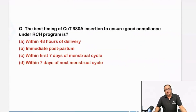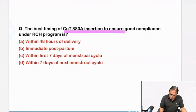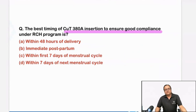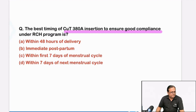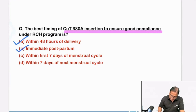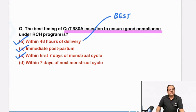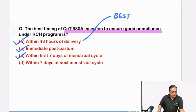Best timing for Copper T380 insertion — could you please confirm if this was the exact language of the question? If there were multiple options, then we know: one, immediate postpartum, and within the first 7 to 10 days of the menstrual cycle is considered best. RCH program says best is within 48 hours of delivery, but we can also do immediate postpartum and within the first 7 days of a menstrual cycle according to the RCH program of India.